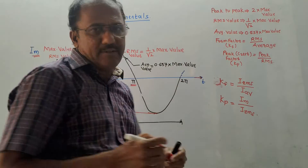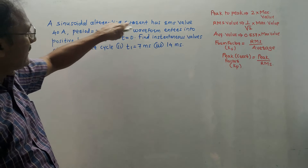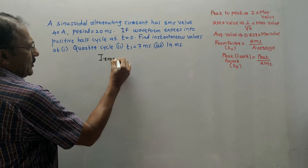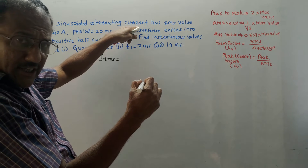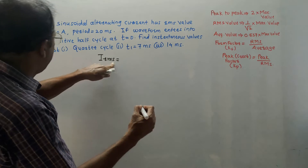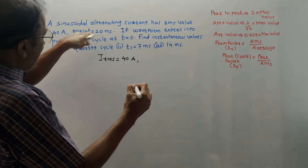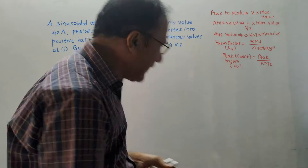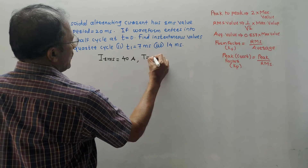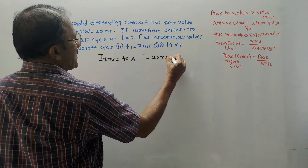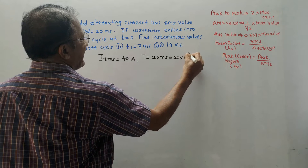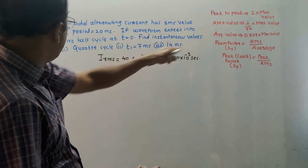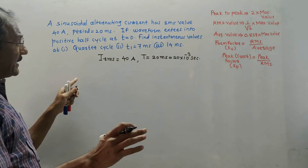The first problem: a sinusoidal alternating current has an RMS value of 40 amperes and a period of 20 milliseconds (20 × 10⁻³ seconds). The waveform enters the positive half cycle at t = 0. Find the instantaneous value at different time periods. First, note down the given values: I_rms = 40 A, T = 20 ms.